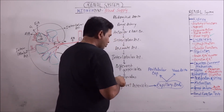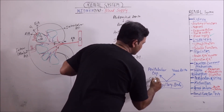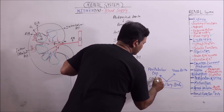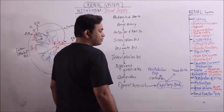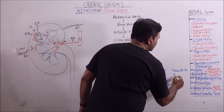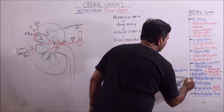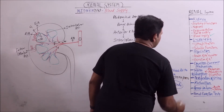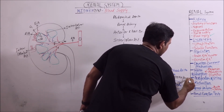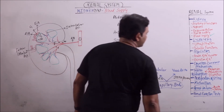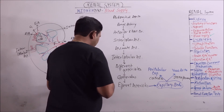These capillary beds are termed peritubular capillaries if cortical nephrons are present. If juxtamedullary nephrons are present, vasa recta will be formed instead.